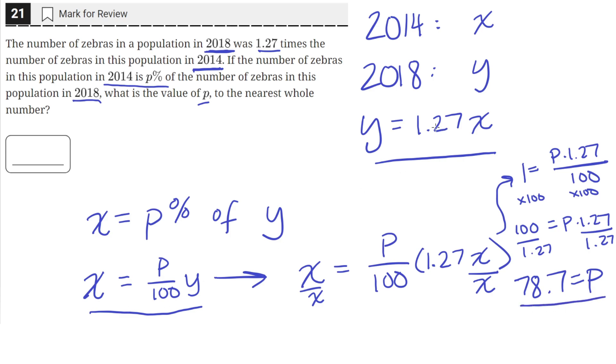So from these two equations that we wrote using the facts given in the problem, the value of p is 78.7, but the question asks us for the nearest whole number for the value of p. So the nearest whole number is 79, so the value of p is approximately 79.